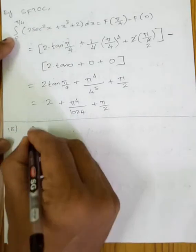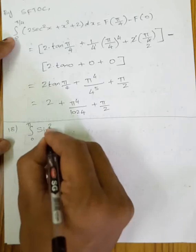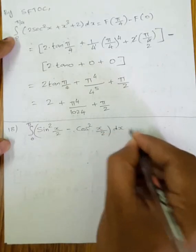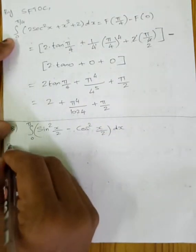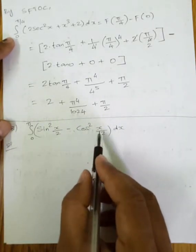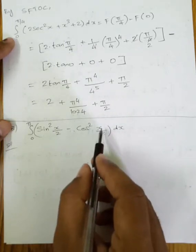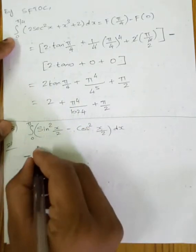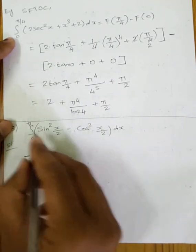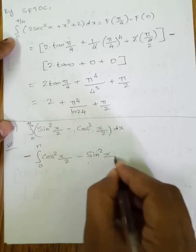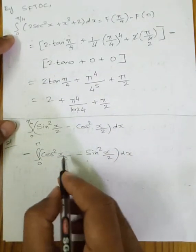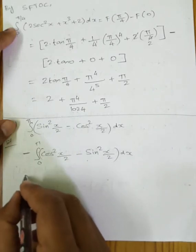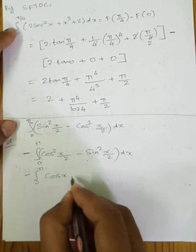18th question: integration of 0 to 5 of (sin²(x/2) − cos²(x/2)) dx. We recall the formula: cos θ = cos²θ − sin²θ, which is cos²(x/2) − sin²(x/2). Rearranging, sin²(x/2) − cos²(x/2) = −cos x.